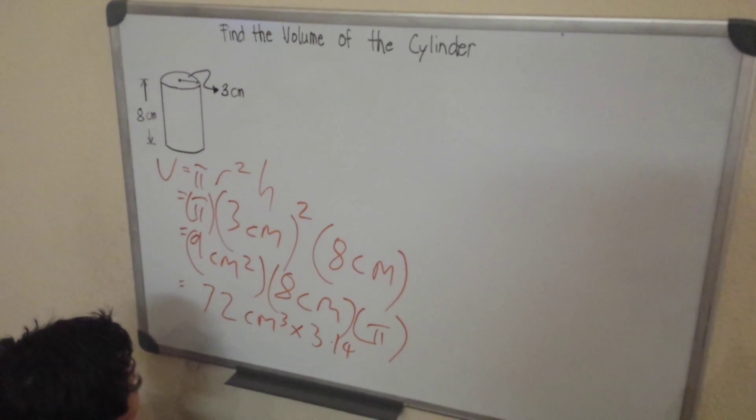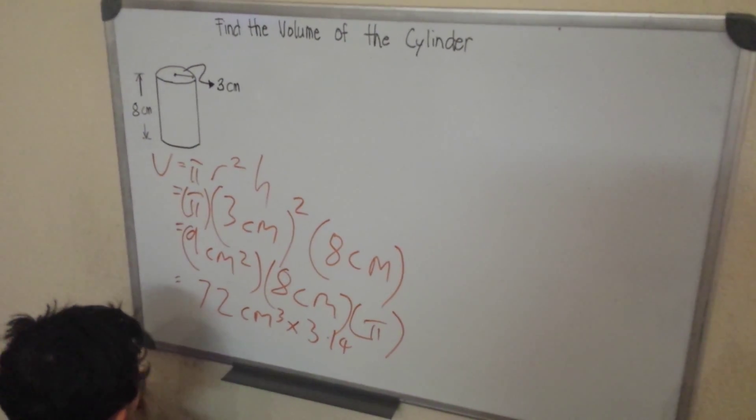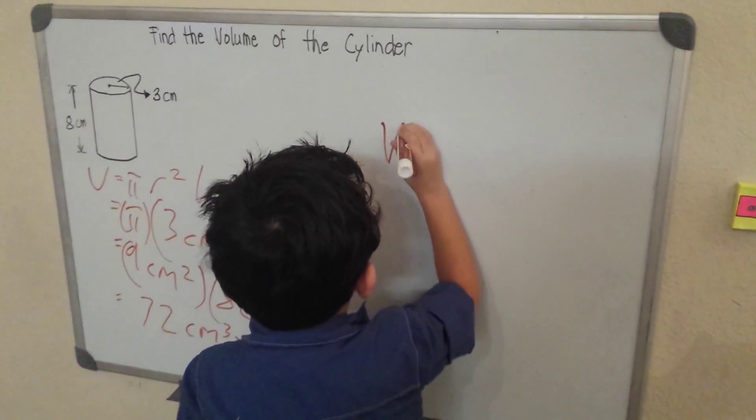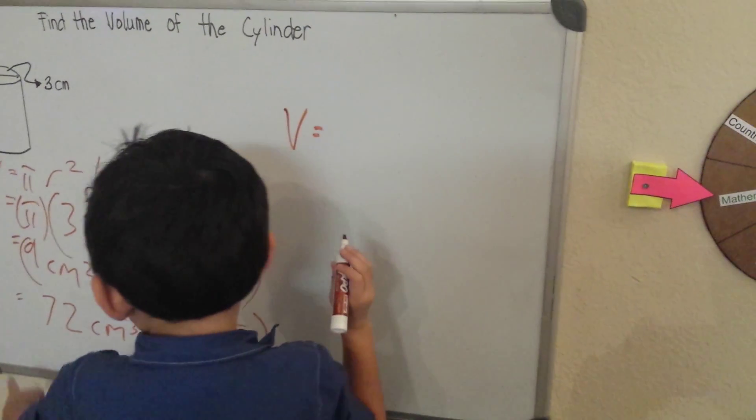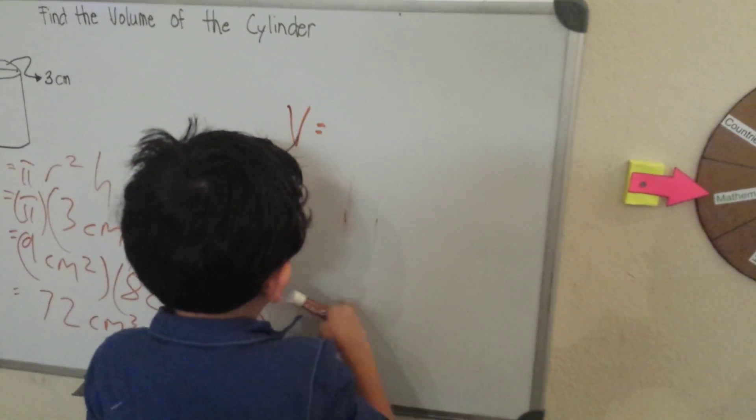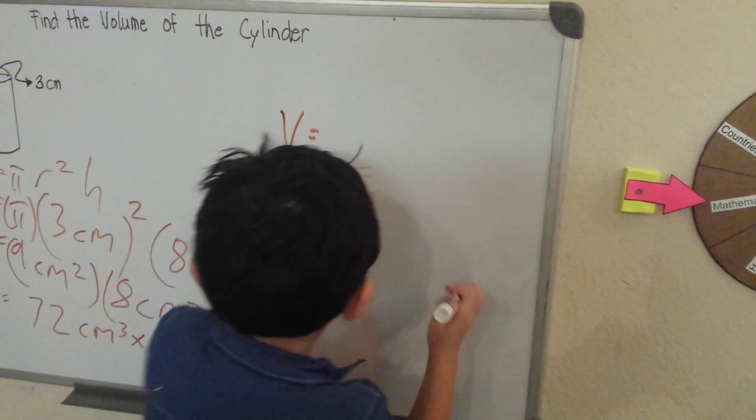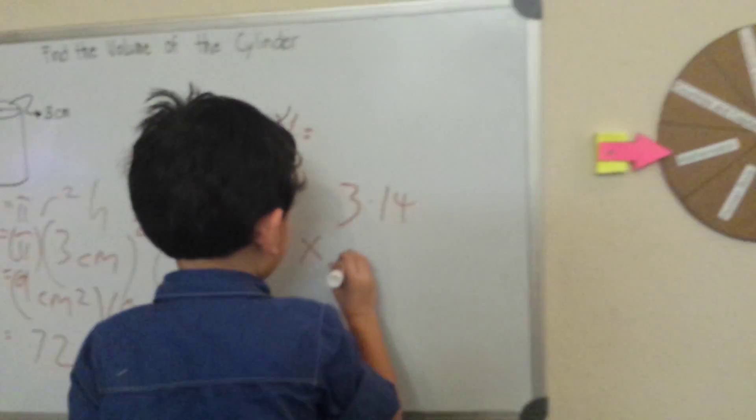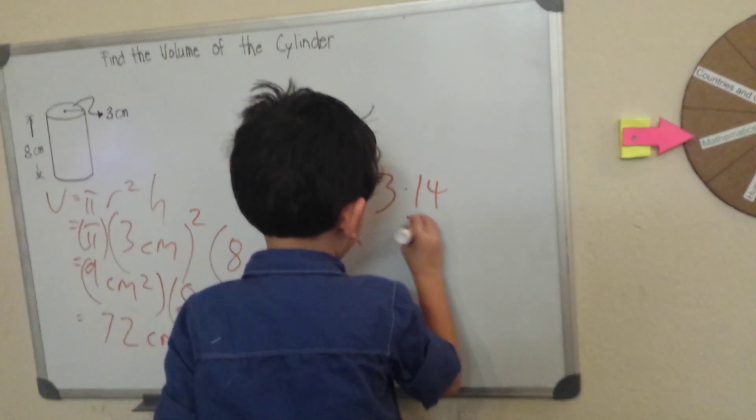Now I can multiply it. Alright, so we have our volume here. So we have here 3.14 times, what is that, 72.